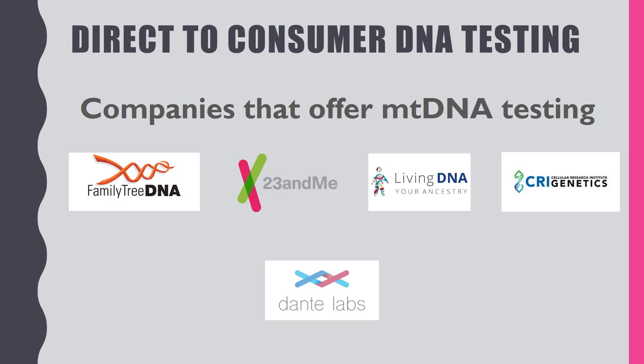Let's look at the companies that offer testing. There are five of them. The best, hands down, for mitochondrial testing is Family Tree DNA, because they offer a test that goes beyond what the others offer. The test is roughly about $150 and must be done separately from your autosomal test. It gives you the furthest you can go in the haplogroup, subclades, and breakdowns of haplogroups — as far back as possible.